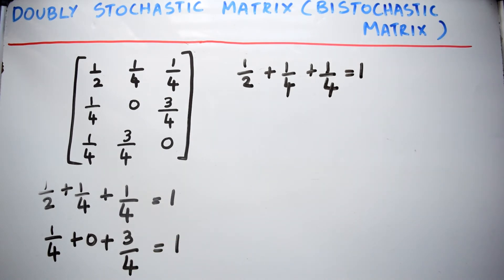If every row and every column sums to 1, such a matrix is called a doubly stochastic matrix.